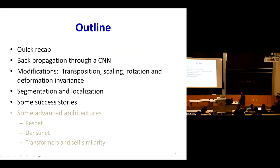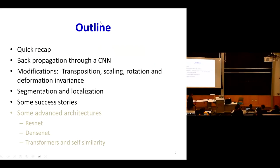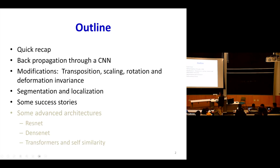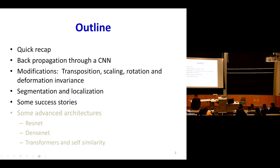This is the last of our series of lectures on convolutional neural networks. We're going to complete the business on backpropagation through convolutional networks, look at a few modifications of CNNs which allow different kinds of invariances, and mechanisms for deriving more information than just basic classification itself using CNNs.